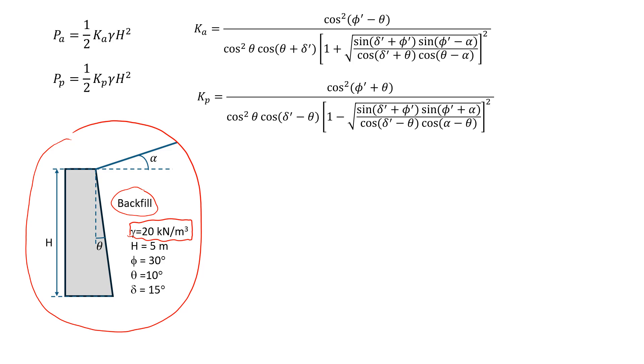Let's assume it's sand, so it only has friction angle, which is 30 degrees. And the height of the retaining wall h is 5 meters.